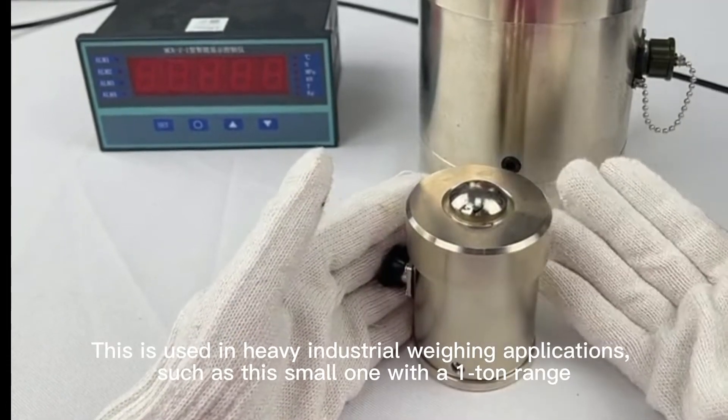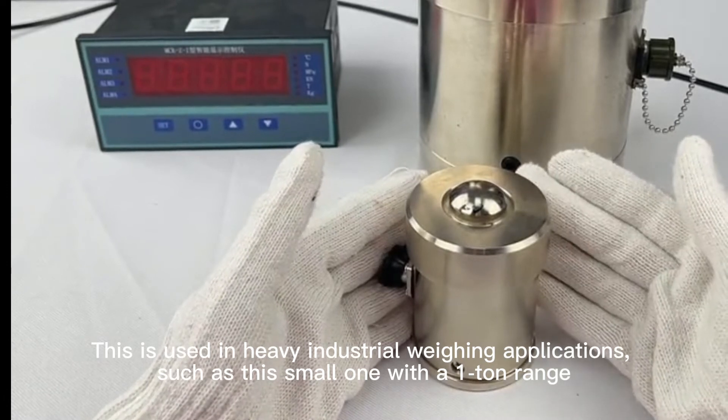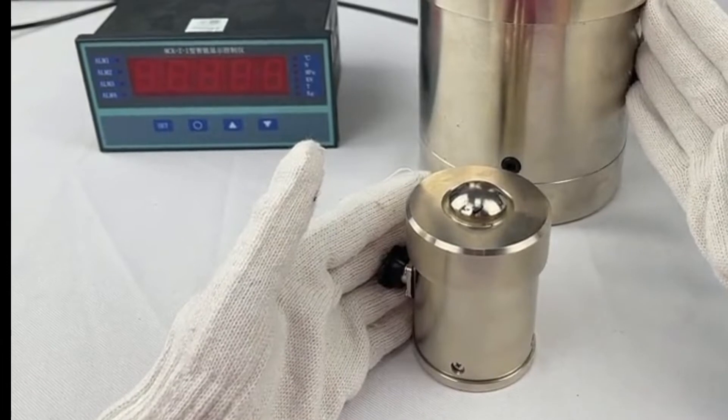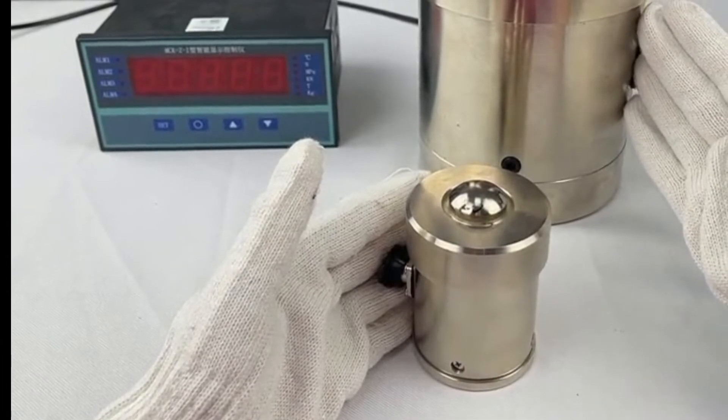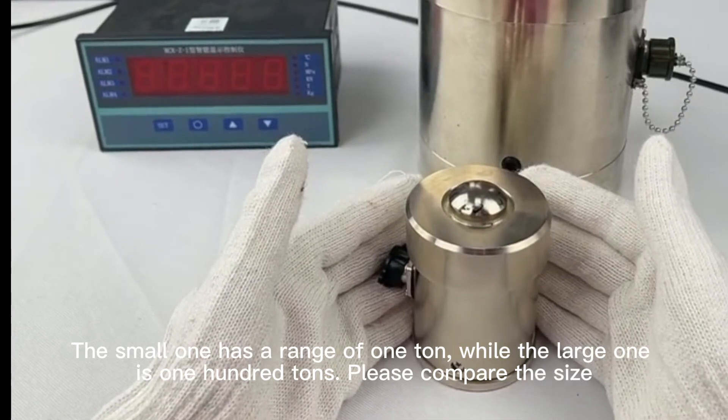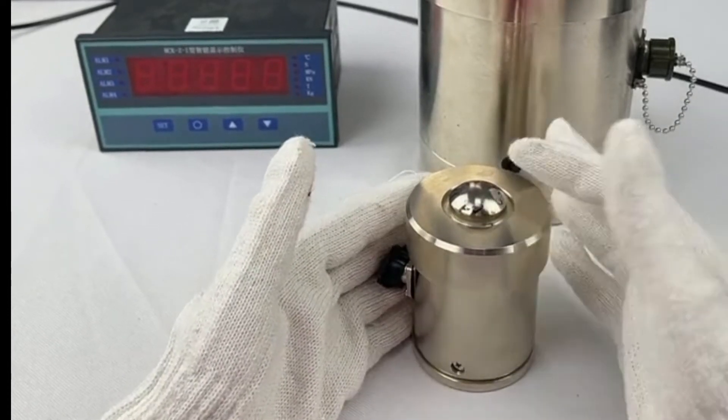This is used in heavy industrial weighing applications, such as this small one with a 1 ton range. The small one has a range of 1 ton, while the large one is 100 tons. Please compare the size.